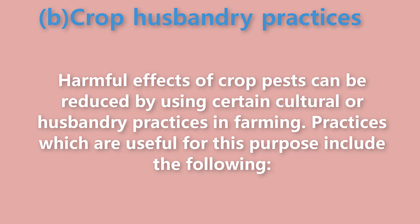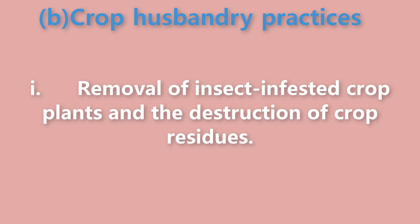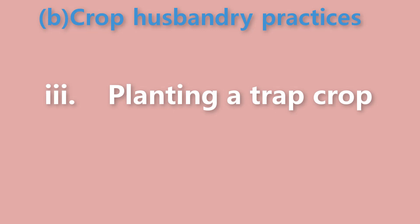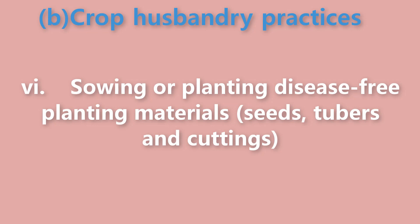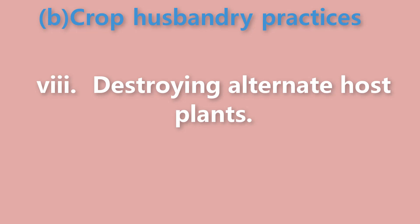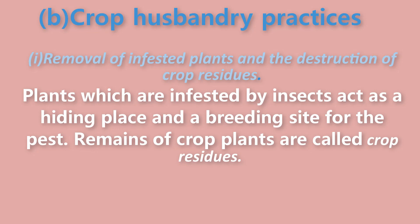B: Crop husbandry practices. Harmful effects of crop pests can be reduced by using certain cultural or husbandry practices in farming. Practices which are useful for this purpose include the following: 1) removal of insect-infested crop plants and the destruction of crop residues, 2) crop rotation, 3) planting a trap crop, 4) early planting or sowing, 5) observing a closed season, 6) sowing or planting disease-free planting materials — seeds, tubers and cuttings.